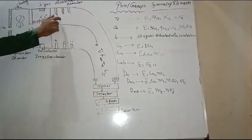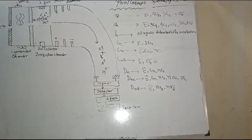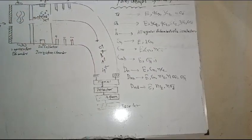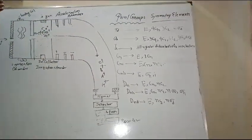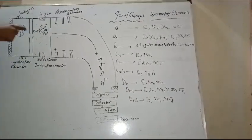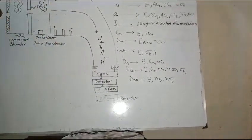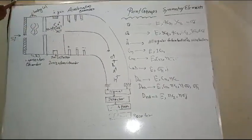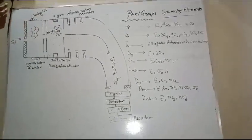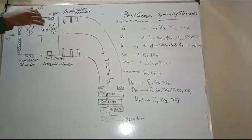As the ions move along this semi-circular path, they experience centripetal force and centrifugal force, which are equal to each other. Fragmented ions with a higher molecular mass feel less deflection and hit the detector first, giving a fast signal. Fragmented ions with a lower molecular mass feel more deflection and take a longer path.